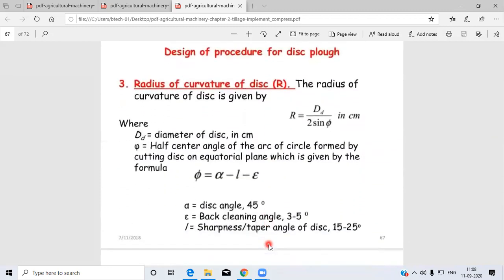Third point is the radius of curvature of the disc. The radius of curvature is given by R = Dd / (2 × sin φ) in centimeters, where Dd is the diameter of disc in centimeters.